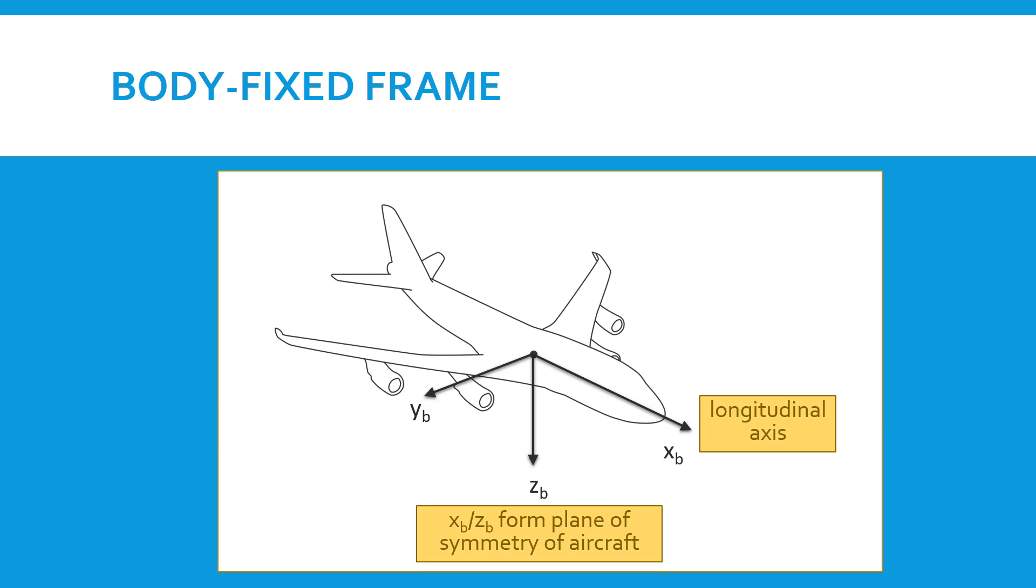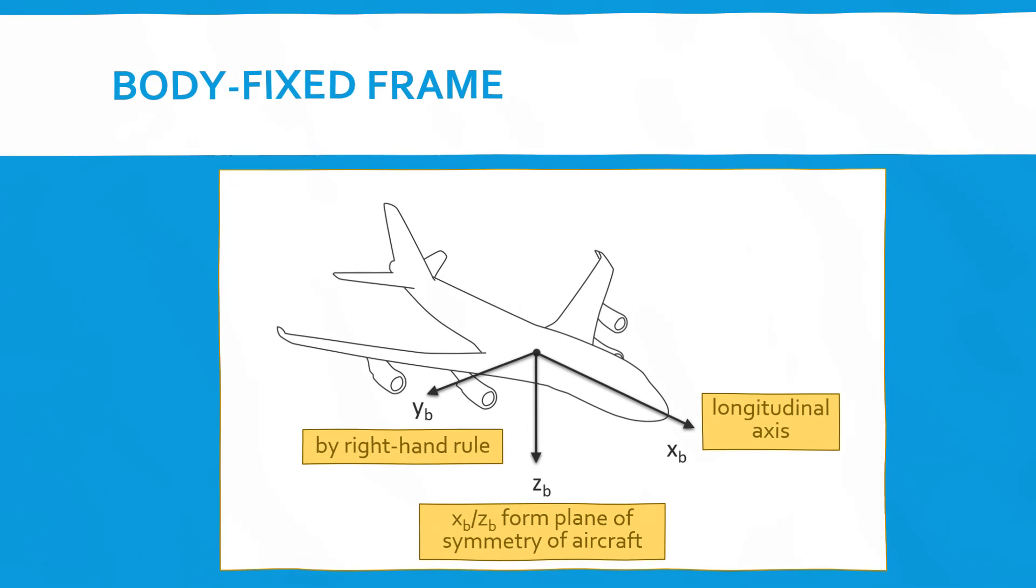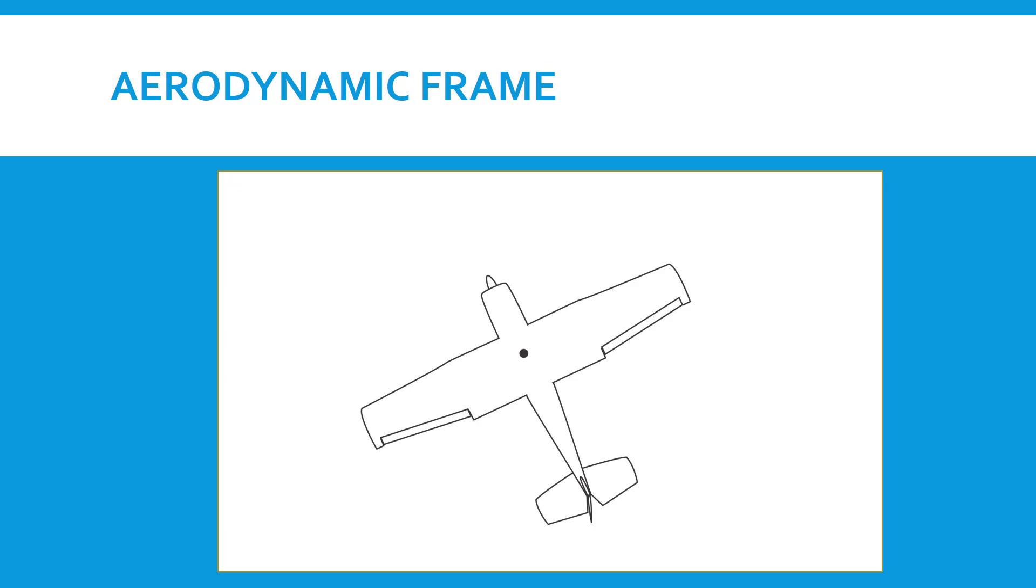The Y direction, because of the right-hand rule again, points outside the aircraft to the right because we need a right-handed coordinate system.